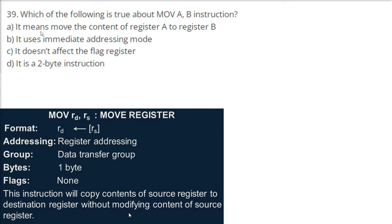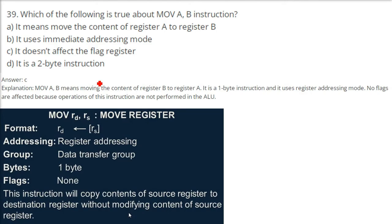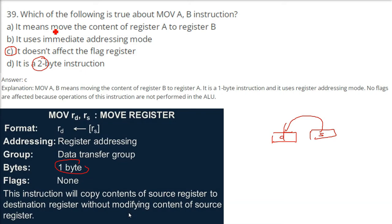Which of the following is true about the MOV A, B instruction? The correct answer is C — it does not affect the flag register. MOV only copies content from source to destination, so there is no change in the flag register. MOV A, B is a 1-byte instruction, not 2-byte. It means moving the content of register B to A, not A to B. It uses register addressing mode, not immediate addressing mode.